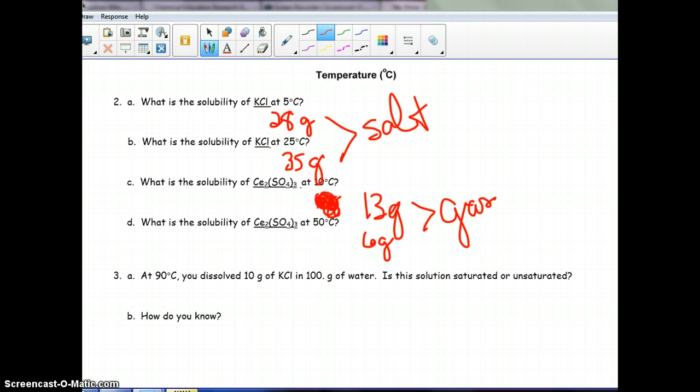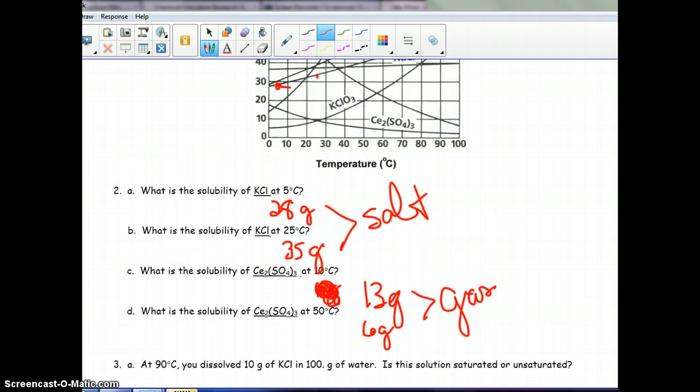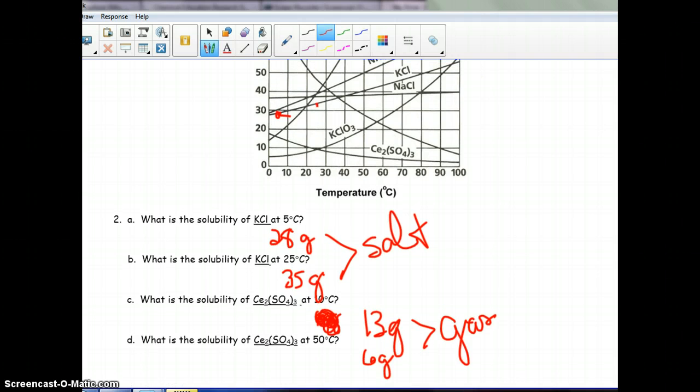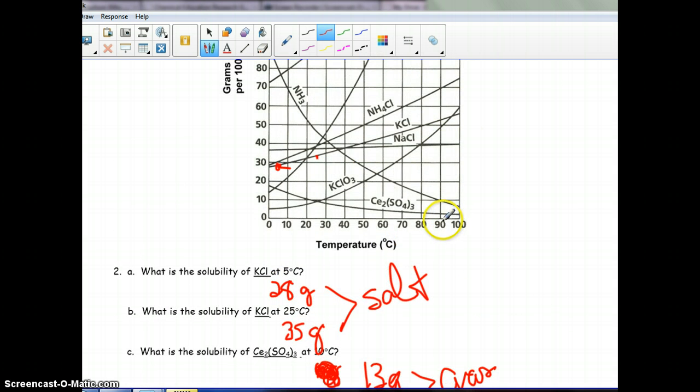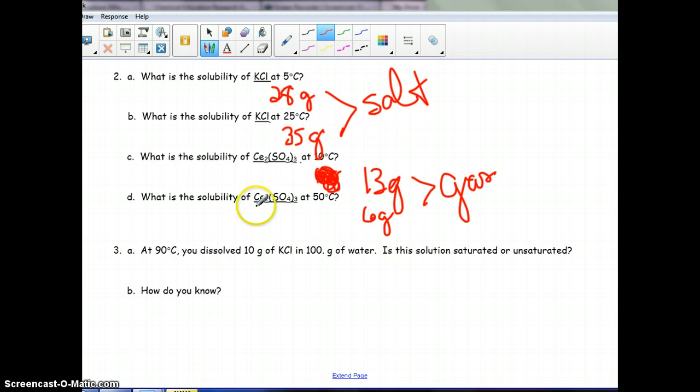Moving on, looking at some more questions. It says at 90 degrees, 10 grams of KCl was dissolved in water. Is this solution saturated or unsaturated? So let's go find our KCl line at 90 degrees. 90 degrees. Trace it up. Here's our KCl line. And it said we had 10 grams. So at 90 degrees, we have 10 grams. We're hitting right here. Now we're looking at KCl line, which is right along here. So it is way below that line. If it is below the line, it is considered unsaturated.